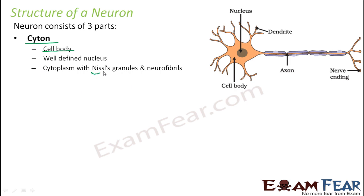The cytone has cytoplasm with Nissl granules and neurofibrils. This entire fluid-like thing present here is the cytoplasm. Inside the cytoplasm we find fiber-like structures called neurofibrils and small granules known as Nissl granules. The Nissl granules help in synthesis and release of proteins because they consist of free ribosomes, and as we know, ribosomes are the site for protein synthesis.